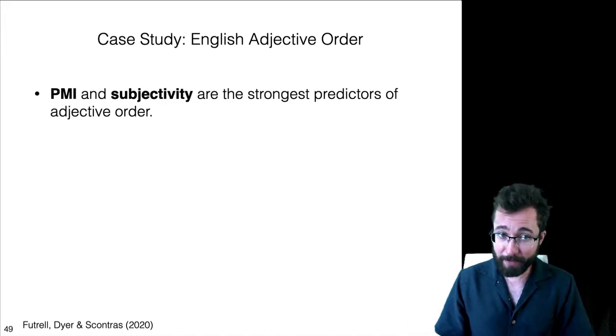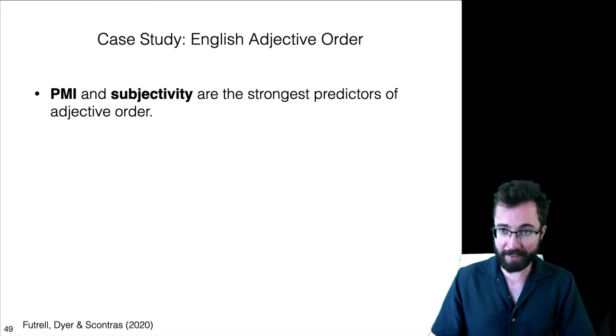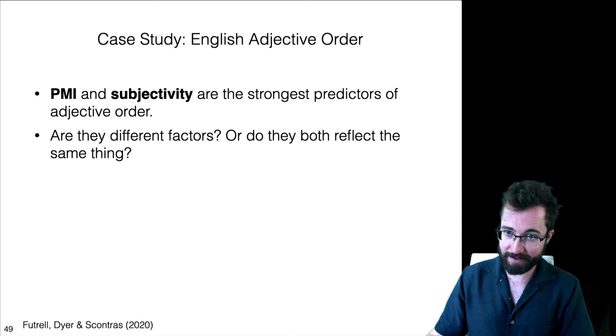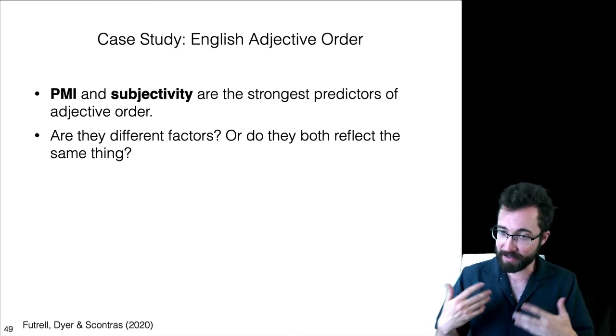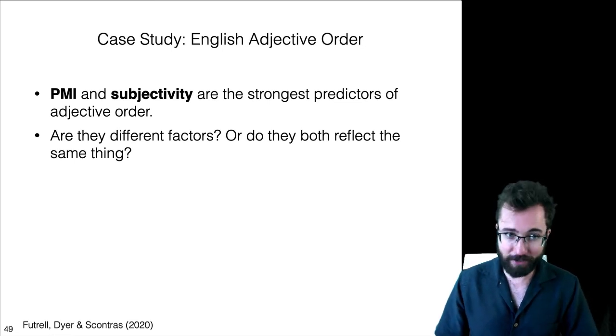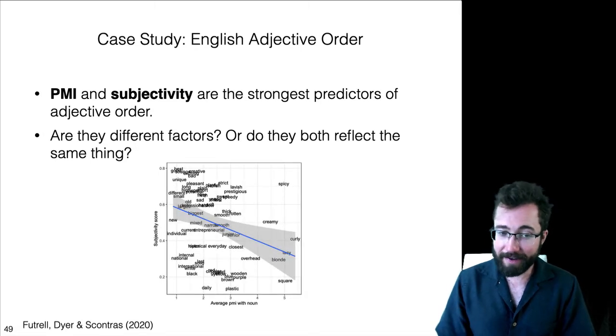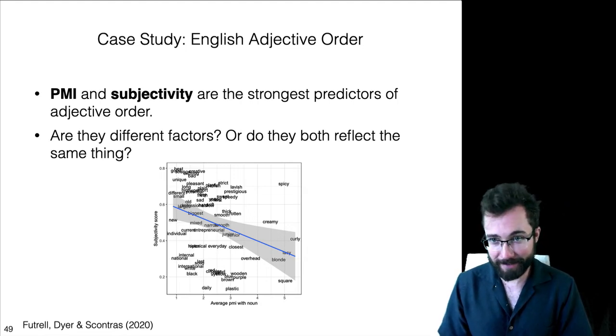So, we found that PMI and subjectivity are the strongest predictors of adjective order. Inasmuch as PMI is successful, this is evidence for an information locality effect in explaining adjective order preferences. As for PMI and subjectivity, should we think about these as competing theories or maybe two different instantiations of the same underlying thing? I don't know. I'll just point out though, that they're highly correlated with each other. And future work is going to try to disentangle these things empirically and also theoretically.